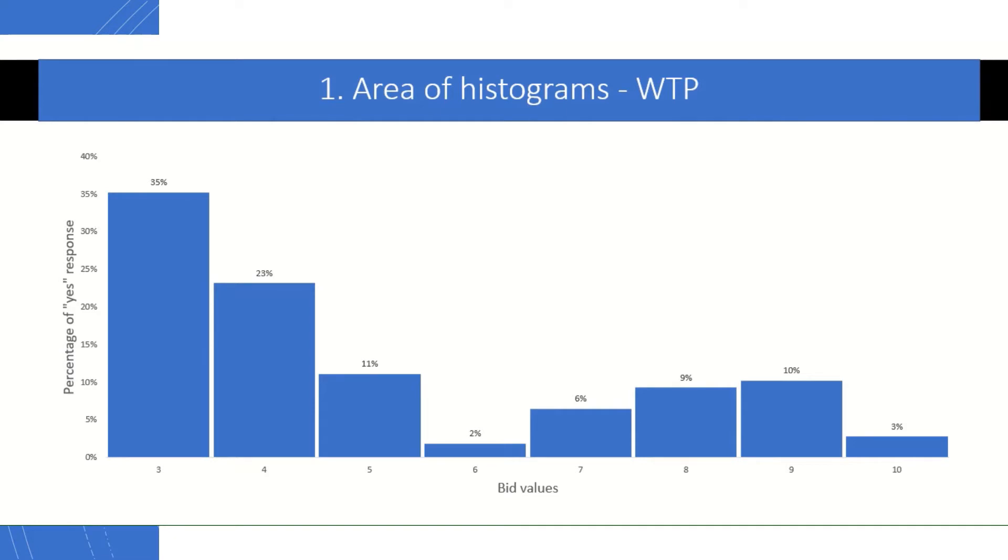Let's start. There are two ways of estimating willingness to pay applying contingent valuation. The first one is using the area of histograms constructed from the survey data of contingent valuation, which I discussed in my first video.